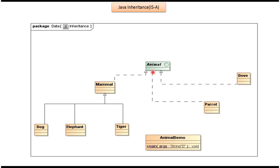Here you can see the animal interface. The animal interface is implemented by Mammal, Parrot, and Dove classes, so mammal is an animal, parrot is an animal, and dove is an animal. Dog, elephant, and tiger classes extend mammal, so dog is a mammal, elephant is a mammal, and tiger is a mammal. Also dog is an animal and elephant is an animal, because mammal implements the animal interface. Now we will see the sample code.